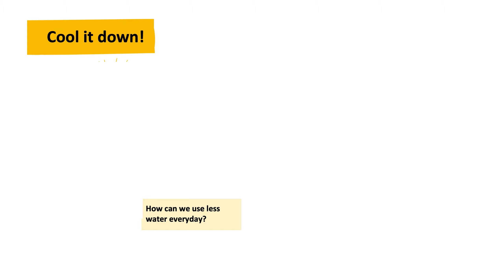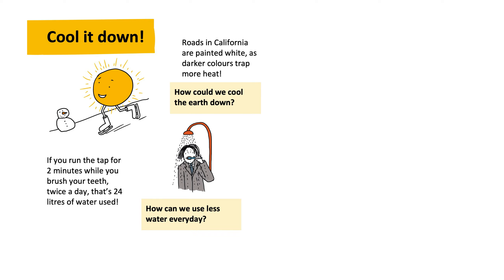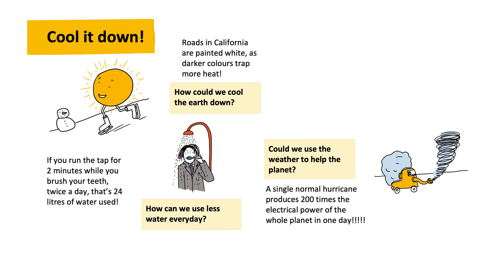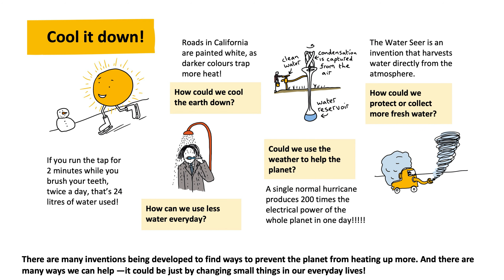How can we use less water every day? If you run the tap for 2 minutes while you brush your teeth, twice a day, that's 24 liters of water used. How could we cool the Earth down? Roads in California are painted white, as darker colors trap more heat. Could we use the weather to help the planet? A single normal hurricane produces 200 times the electrical power of the whole planet in one day. How could we protect or collect more fresh water? The Water Seer is an invention that harvests water directly from the atmosphere. There are many inventions being developed to find ways to prevent the planet from heating up more, and there are many ways we can help — it could be just by changing small things in our everyday lives.